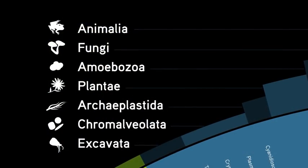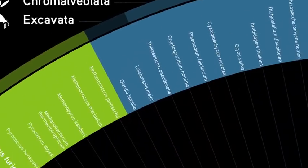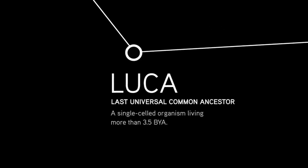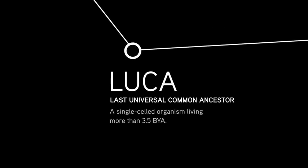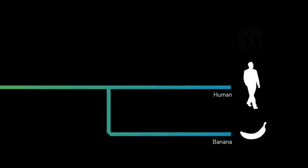Every living thing on Earth is descended from a single organism. Biologists call that organism LUCA, which stands for the Last Universal Common Ancestor. LUCA probably lived about almost four billion years ago. Strangely, what this means is that you and bananas share an ancestor.